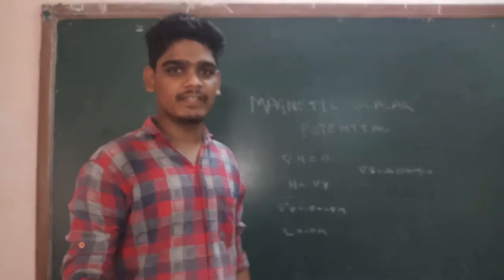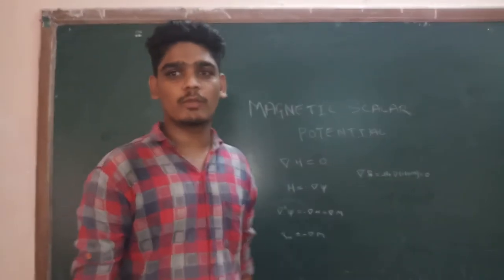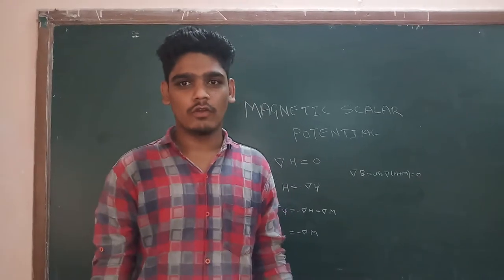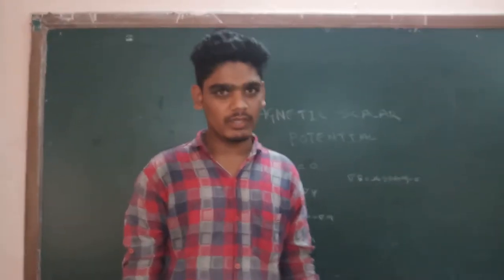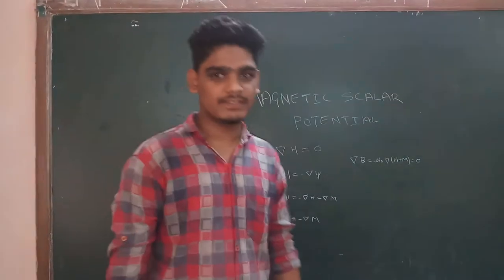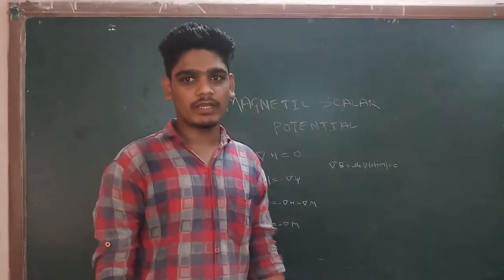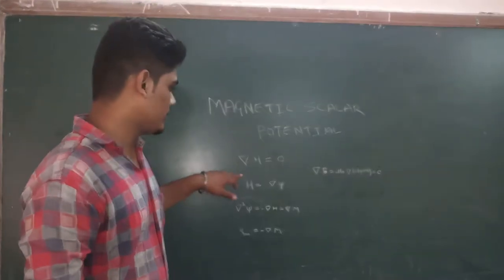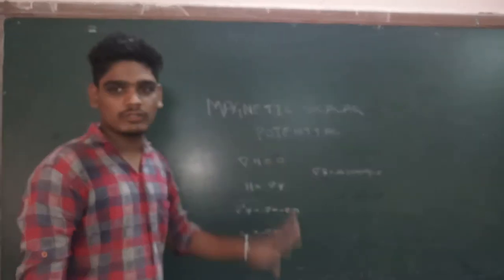Today's topic is magnetic scalar potential. The scalar potential is another useful quantity describing the magnetic field, especially for permanent magnets. In a simply connected domain where there is no current, therefore ∇·H = 0.